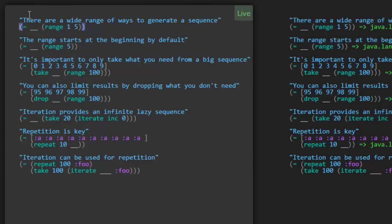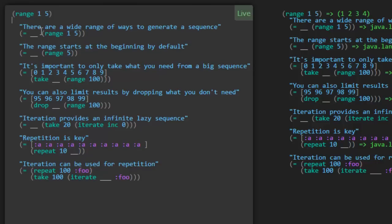There are a wide range of ways to generate a sequence. What is a sequence? First of all, I don't know. Let's see. Let's find out what this is. I guess a list is a sequence, a vector is a sequence. What's going on here? So we've got range from 1 to 5. So what is that going to give us? Here's a way to cheat. Let's see exactly what that gives us. Range, 1 to 5.